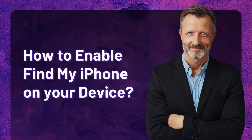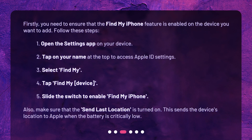How to enable Find My iPhone on your device? First, you need to ensure that the Find My iPhone feature is enabled on the device you want to add. Follow these steps: 1. Open the Settings app on your device. 2. Tap on your name at the top to access Apple ID settings. 3. Select Find My. 4. Tap Find My device. 5. Slide the switch to enable Find My iPhone. Also, make sure that Send Last Location is turned on. This sends the device's location to Apple when the battery is critically low.